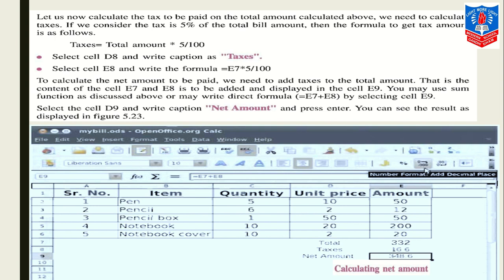Now we have to find out the net amount also. To calculate the net amount to be paid, we need to add taxes to the total amount - that is, the content of E7 and E8 to be added or to be plus and displayed in cell E9. You may use the sum function as discussed above. The formula is equals to E7 plus E8. And before that, in cell D9, we are writing the caption 'Net amount', and in front of that, in E9, we are calculating equals to E7 plus E8. By selecting E9, we will find out our net amount.